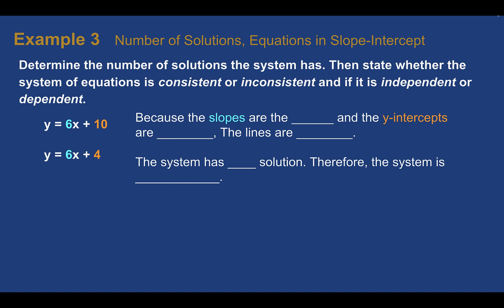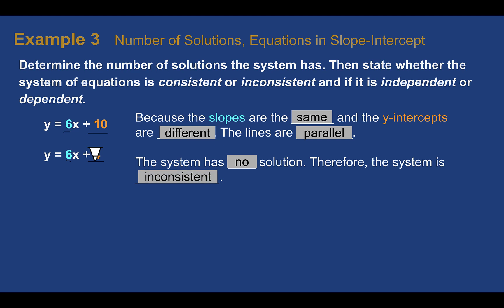Example three: number of solutions — equations in slope-intercept form. Determine the number of solutions the system has, then state whether it is consistent or inconsistent and independent or dependent. Here we are just given the equations, not the graph. We could use graphing software like Desmos, but we can tell just from the equations. The slopes are both six, but the y-intercepts are different — one is at ten, one is at four. These lines are parallel, so if you see the same slope but different y-intercepts, you have parallel lines. This system has no solution, and because there's no solution, this system is inconsistent.